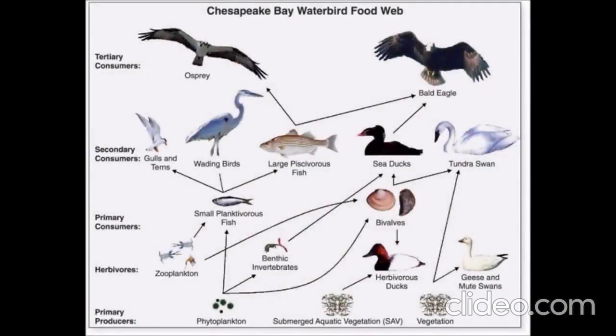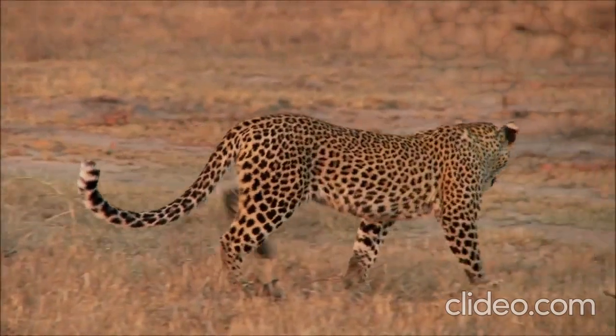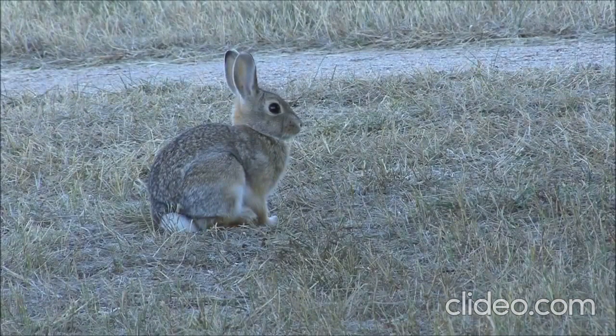Natural ecosystems usually have more complicated food chains, however. A network of interconnected food chains is called a food web. Arrows are used to show which direction the energy flows and help keep track of the connections between organisms. Now that you understand a little bit more about food chains, see if you can find the connections between living things around you.